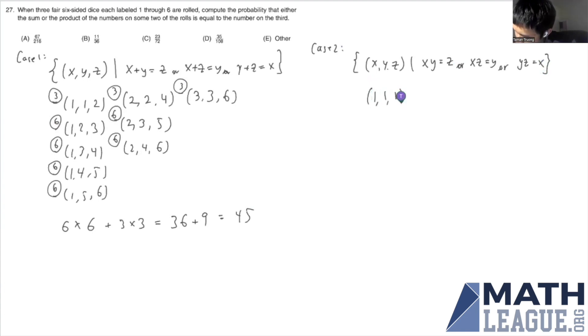And we'll list the pairs the same way. We have 1, 1, 1. 1, 2, 2. 1, 3, 3. 1, 4, 4. 1, 5, 5, and 1, 6, 6.